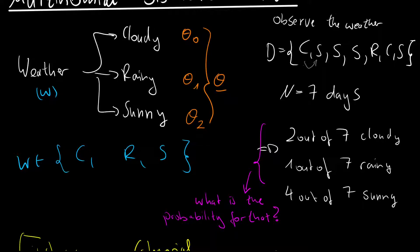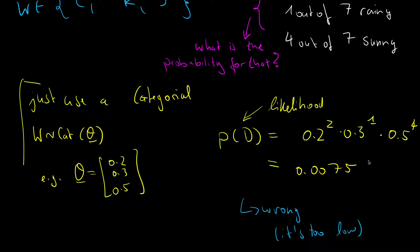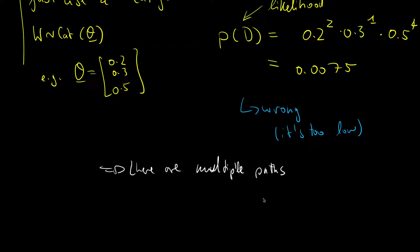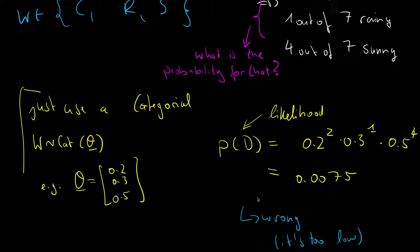If you crunch the numbers you get 0.075, but this is the wrong answer — it is too low. The reason it's too low is that in calculating the likelihood we are assuming we observe the weather in this specific sequence: first cloudy, then sunny, and so on. But we could swap the cloudy and sunny observations and still have the same counts — 2 out of 7, 1 out of 7, 4 out of 7 — just a different sequence. We have to consider multiple paths, meaning the multiple permutations that reduce to 2 out of 7, 1 out of 7, and 4 out of 7. This is similar to the binomial distribution, except binomial covers two states (Bernoulli), while here we have more than two states.